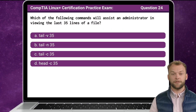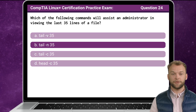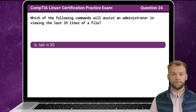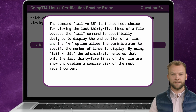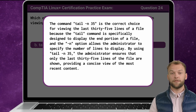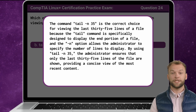Question 24. Which of the following commands will assist an administrator in viewing the last 35 lines of a file? The answer is B: tail -n 35. The tail -n 35 command is the correct choice because the tail command is specifically designed to display the end portion of a file, and the -n option allows the administrator to specify the number of lines to display. By using tail -n 35, the administrator ensures that only the last 35 lines of the file are shown, providing a concise view of the most recent content.